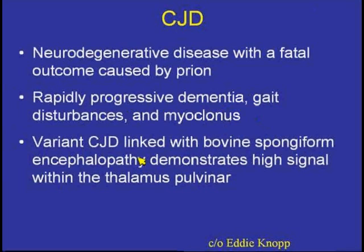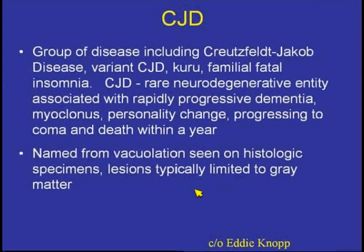The variant form is linked to bovine spongiform encephalopathy — so-called mad cow disease — transmitted to humans. In those individuals, high signal intensity within the thalamic pulvinar is the most common finding, but you may see it elsewhere within the basal ganglia. This is a whole family of diseases which includes Kuru, familial fatal insomnia, and others, with vacuolization seen histopathologically as the hallmark feature.